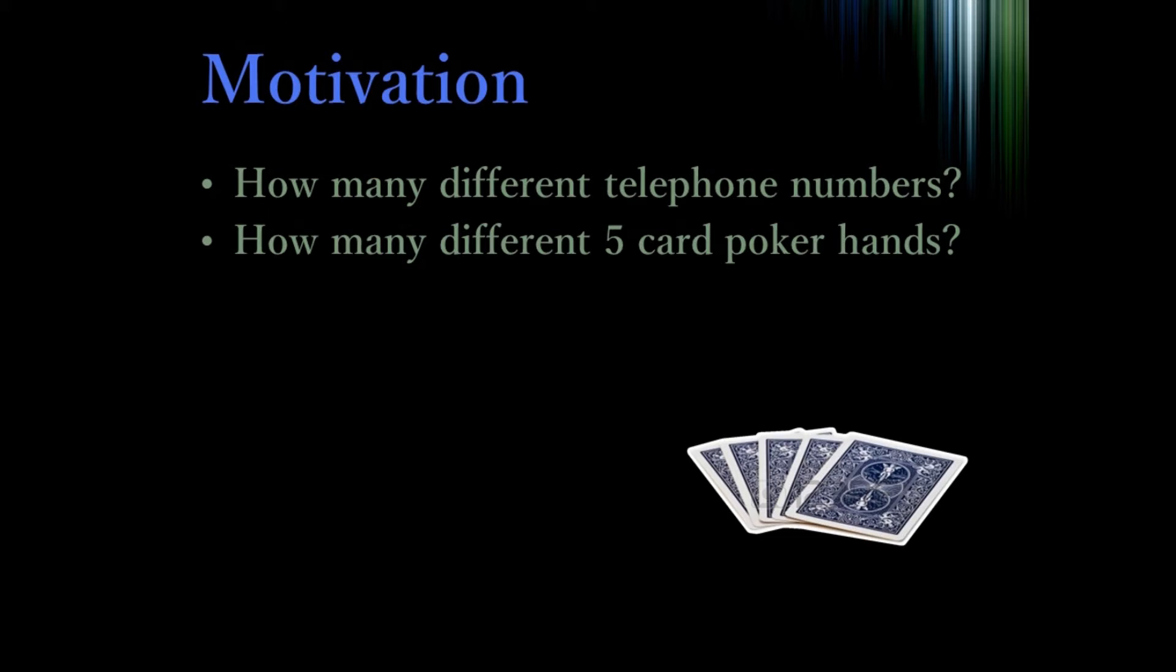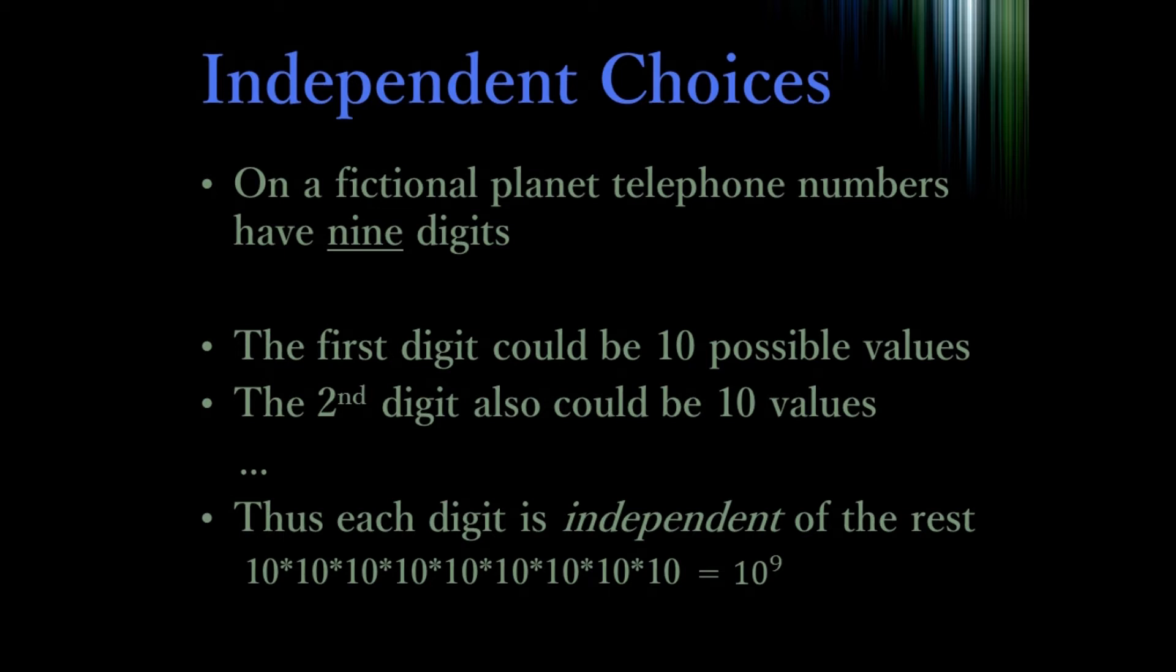The most obvious of these are when the things that we're trying to count are independent of each other. For example, the digits in a phone number. On a fictional planet, telephone numbers have nine digits. The first digit could be any value from zero through nine, and the same thing for the second digit, the third digit, and so on. As a result, we get every possible nine-digit long sequence. We can consider each of these choices to be an independent event, and that each choice has ten possible values. So what we do is we multiply the number of options at each choice together to get our result, which is ten to the ninth.